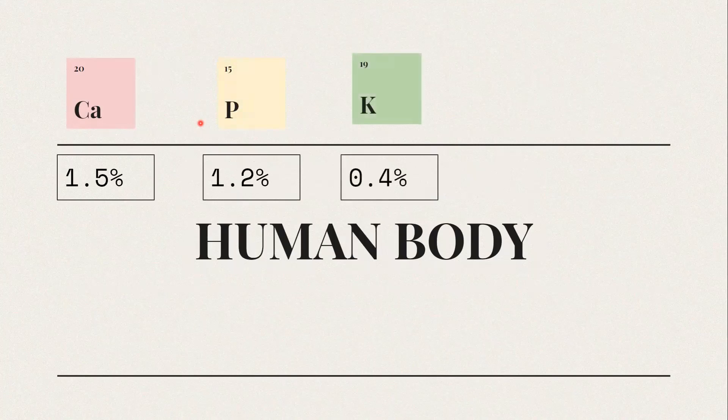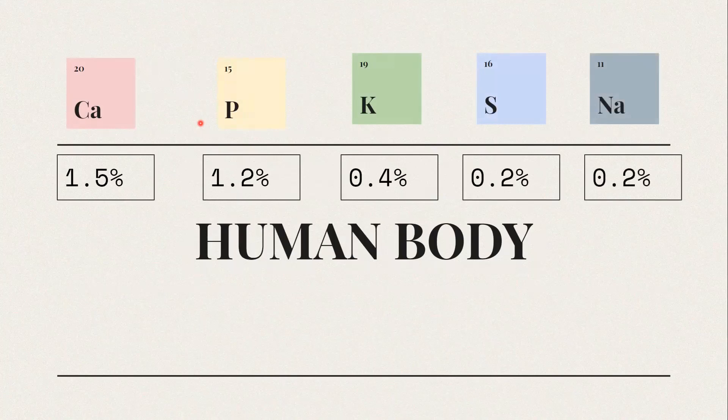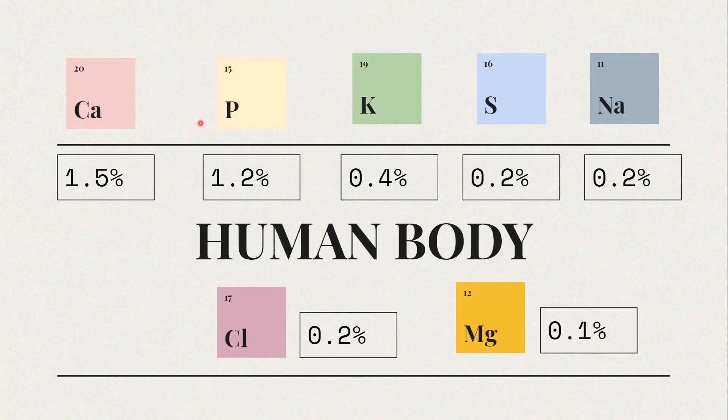Sulfur is 0.2%, sodium 0.2%, chlorine 0.2%, and magnesium 0.2%. Magnesium was abundant in the earth's crust but is least abundant here. The most abundant metal in our body is calcium, followed by potassium, sodium, and magnesium.